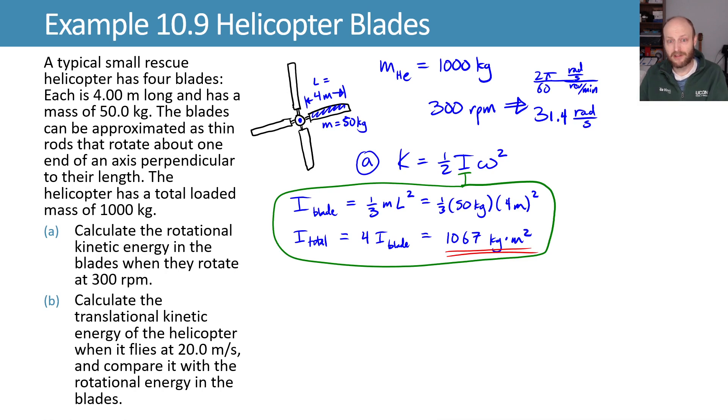So this whole thing right there was just finding what our moment of inertia is. Now that we have that, we have moment of inertia. We have our angular velocity in radians per second. And we can plug them in to that one half i omega squared equation to find our kinetic energy of 5.26 times 10 to the fifth joules.